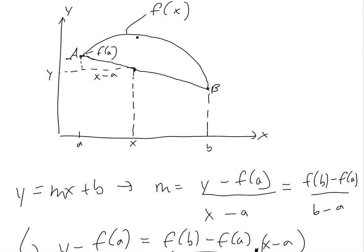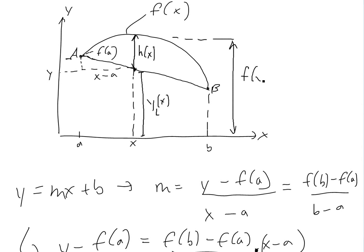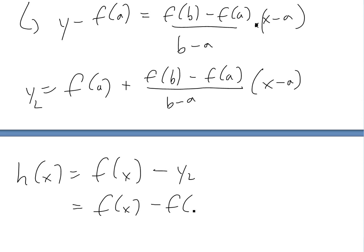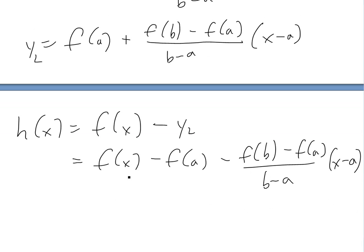So now let's define another function. If this is f of x right here, we'll call this h of x, which is the difference between f of x minus the y of the line. So h of x equals f of x minus y of the line. If we just write that out, h of x equals f of x minus f of a minus the slope times x minus a. So this is h of x right here.